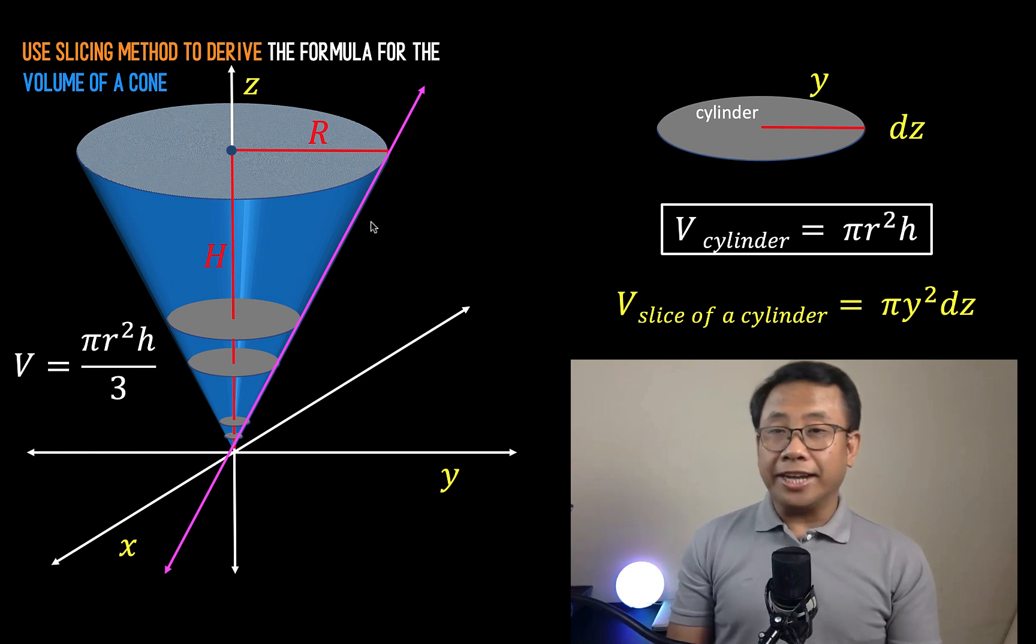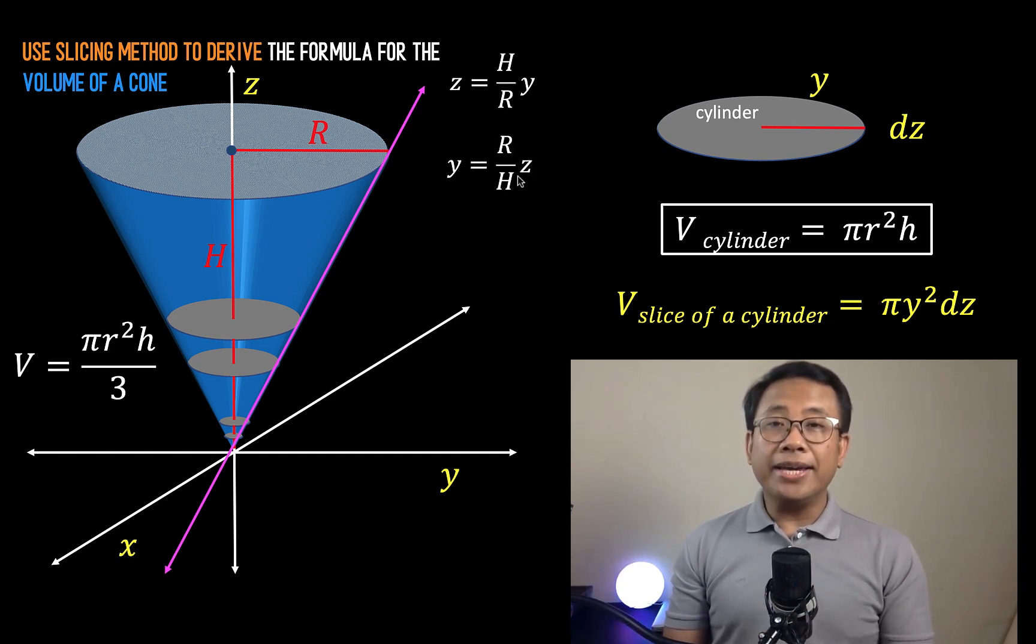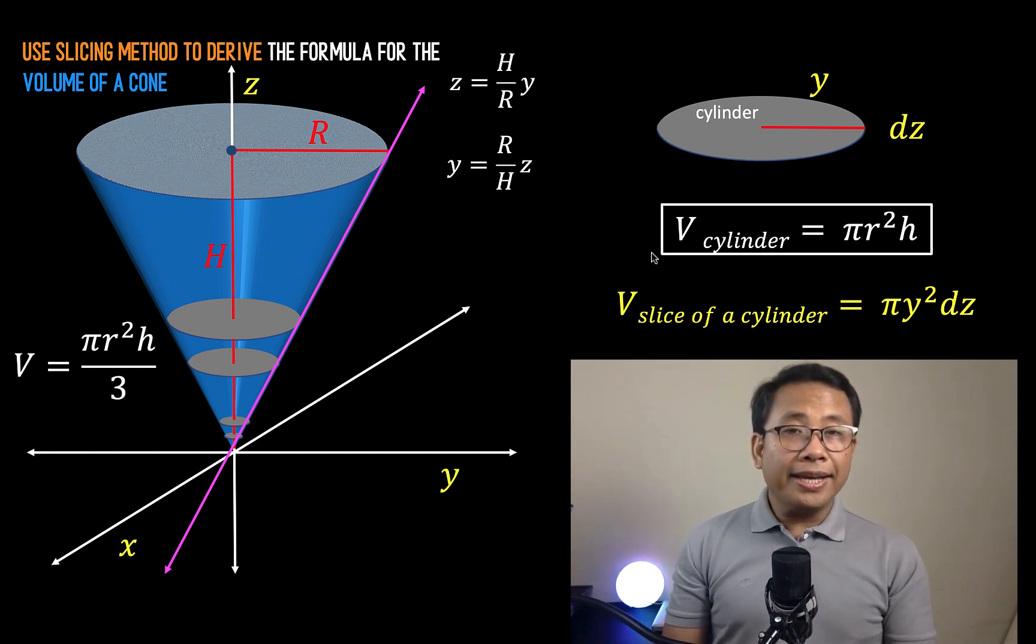So what is the equation of this pink line? The two variables involved here are z and y. The equation is z equals the slope of this pink line. The rise is h and the run is r, so h over r times y. And solving for y, we have y equals r over h times z. And we can now replace this y by this expression, so y is now r over h times z.